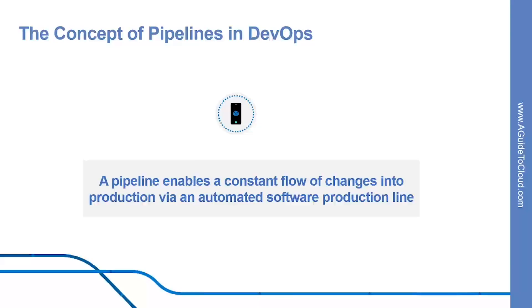Think of this as a pipeline. The pipeline breaks down the software delivery process into stages. Each stage is aimed at verifying the quality of new features from a different angle to validate the new functionality and prevent errors from affecting your users. The pipeline should provide feedback to the team and visibility into the flow of changes to everyone involved in delivering the new features. A typical pipeline will include the following stages.